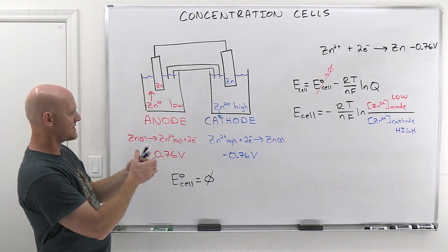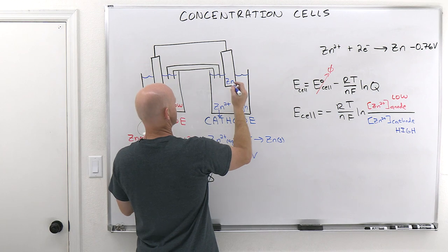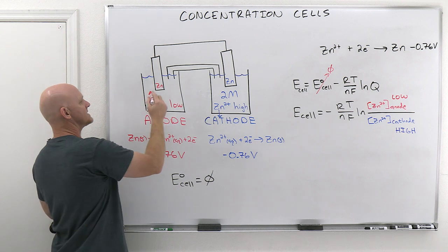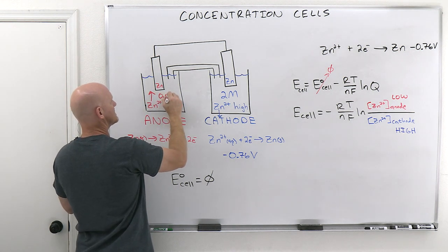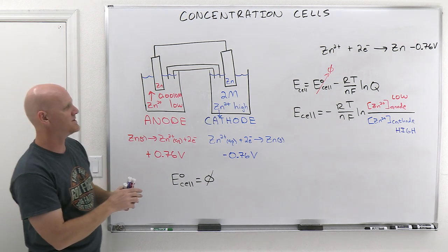So let's work an example here. Let's say that in the cathode compartment here, let's say we do have, I don't know, let's go to molar concentration. And over here in the anode, let's say that we have a 0.001 molar concentration and figure out what that E cell is going to come out to be.